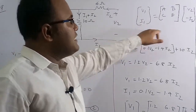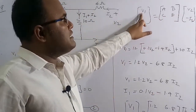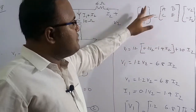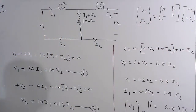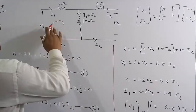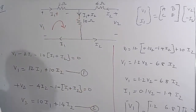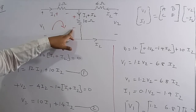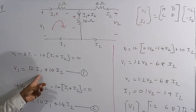For ABCD parameters: V1 = A·V2 − B·I2 and I1 = C·V2 − D·I2. We need to express V1 and I1 in terms of V2 and I2. Writing KVL in the first loop: V1 − 2I1 − 12(I1+I2) = 0, which simplifies to V1 = 12I1 + 10I2. This is equation 1... wait, the instructor gets V1 = 12I1 + 10I2.